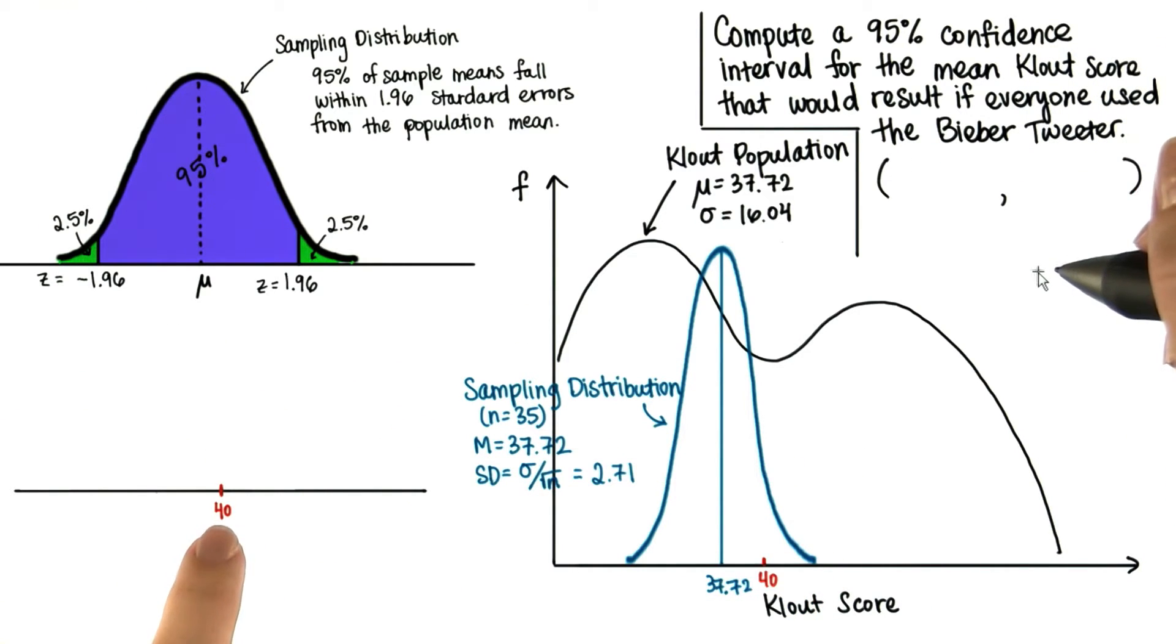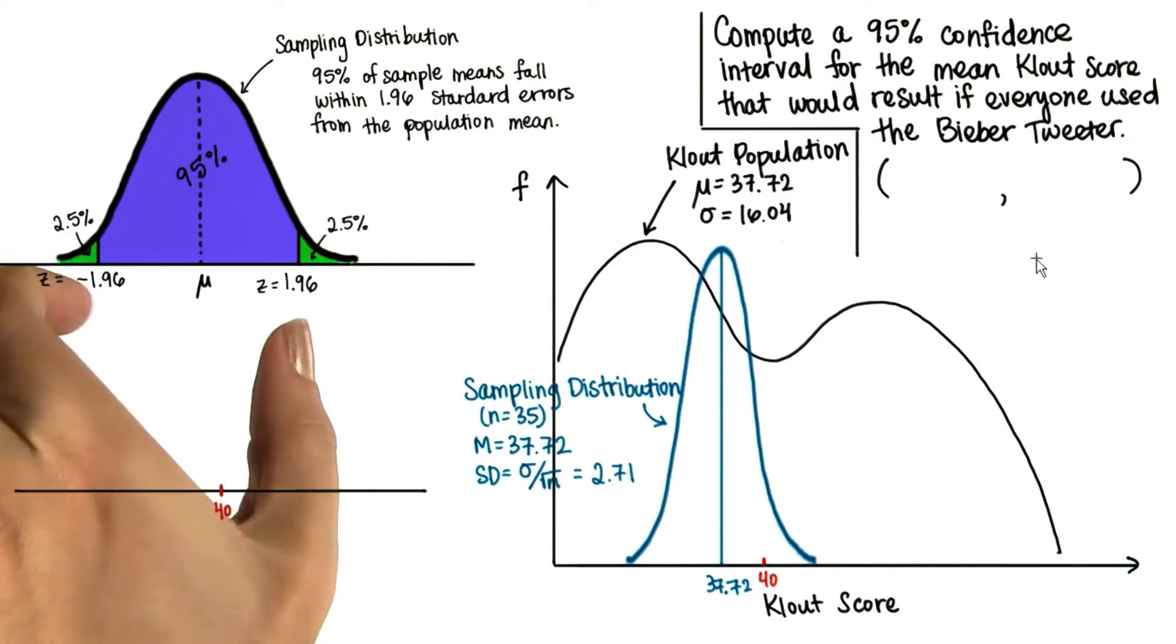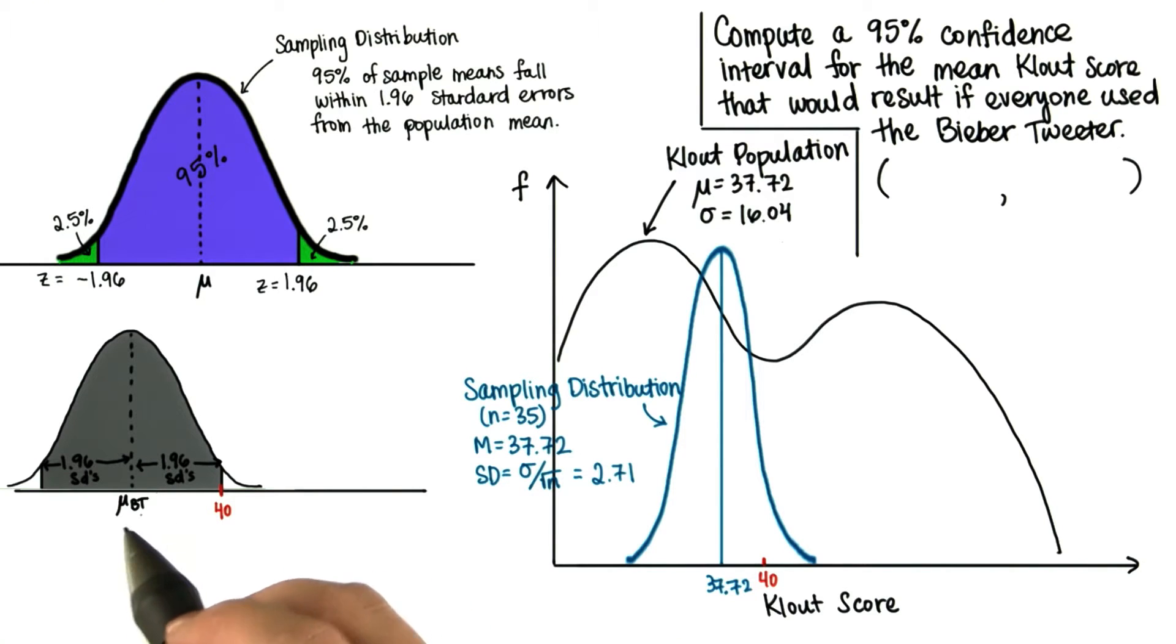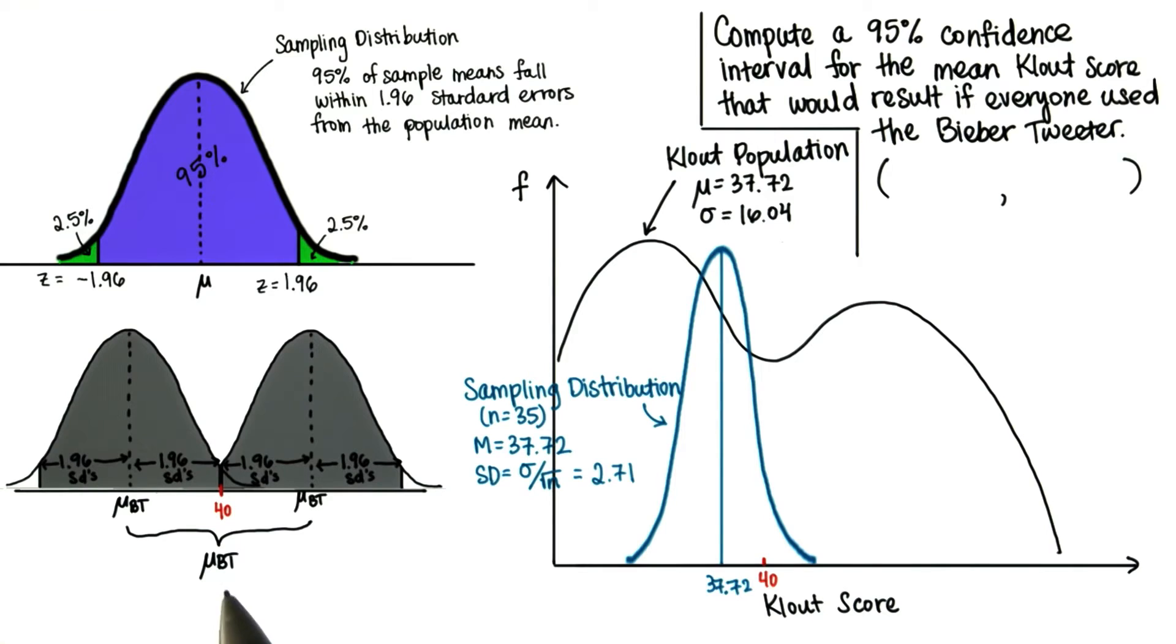This sample mean doesn't change. It's there. But if it's going to be one of the 95% of sample means that falls within 1.96 standard deviations from the mean, then the population mean can range from here to here. So, this here is the range in which the population mean of everyone who uses the Bieber tweeter is most likely to fall.